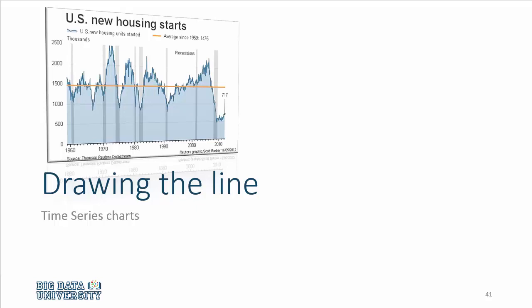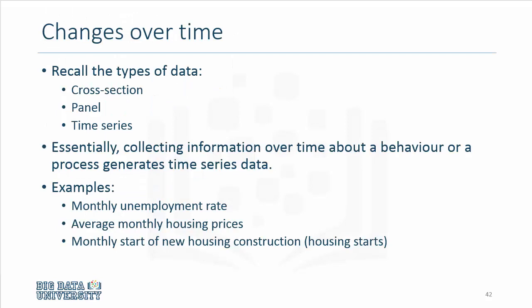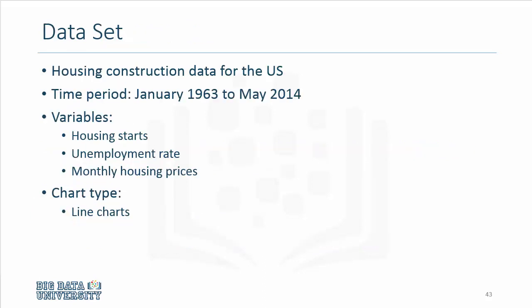We will now discuss how to illustrate time series data. Essentially, we discuss three types of data sets: cross-sectional data, panel data, and time series data. Time series data is information collected over time about a behavior or a process. For instance, when we collect information on housing prices or unemployment rate for a given month over a longer period of time, that data set is called time series data.